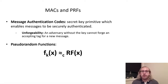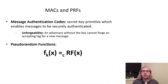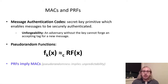Pseudorandom functions, or PRFs, are key indexed families of functions which are surprisingly closely related to the tag generation algorithm for MACs. The definition of pseudorandomness requires that the output of the function, given a randomly chosen key, should be computationally indistinguishable from that of a truly random function by an adversary which may query the function on chosen inputs. It is relatively straightforward to see that MACs can be constructed from PRFs, since one can easily show that this notion of pseudorandomness implies unforgeability, and hence a PRF can be used directly as a tagging algorithm for a MAC.